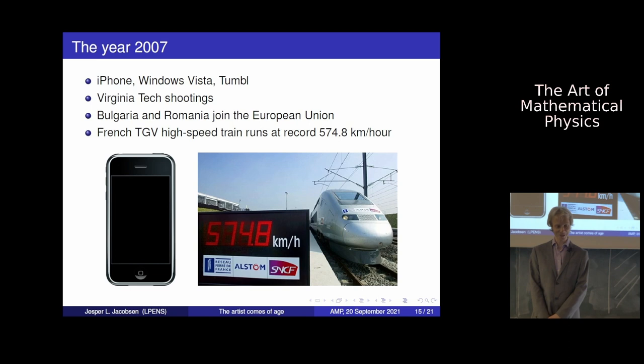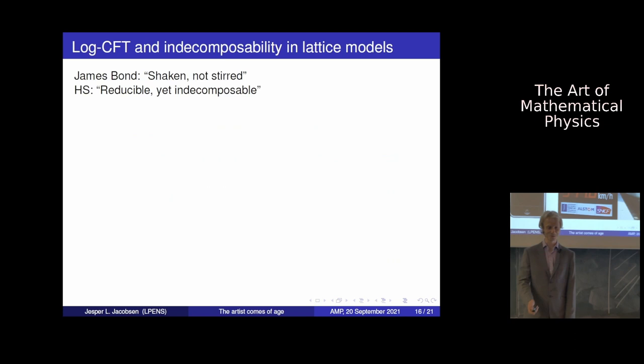That brings me to the year 2007. In 2007 the iPhone was introduced, iPhone 1. It sells for a fortune now. Windows Vista. Tumblr. There were unfortunate shootings in the US. Bulgaria and Romania joined the European Union. And something was moving at very high speed: French TGV trains that ran at a record-breaking 574.8 kilometers per hour. Just in front of that train, if you looked carefully, you could see somebody running faster. That was Hubert, which brings me to James Bond. James Bond wants his vodka martini shaken, not stirred. Hubert wants his physics reducible yet indecomposable. When Hubert goes to a bar, this is his catchphrase.